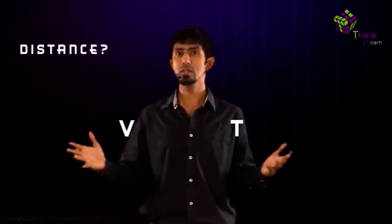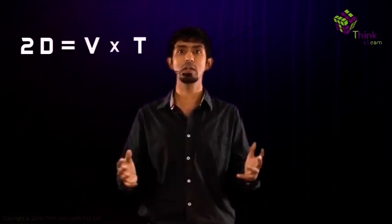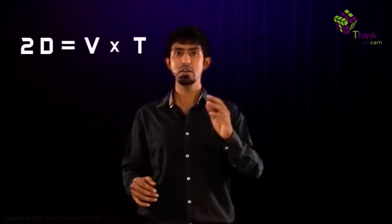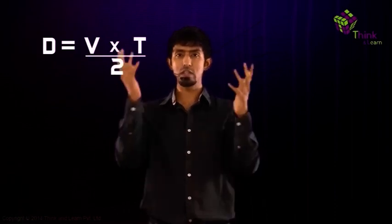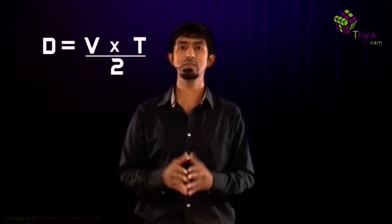Let's do this with numbers. Let the speed of sound in that medium be V, and the time taken be T. The total distance traveled is 2D — the sound goes to the target and comes back. So 2D equals V times T, which means the distance D equals VT divided by 2. You can rearrange this however you want, but that's the crux of it.